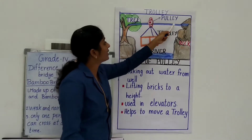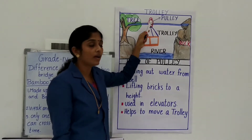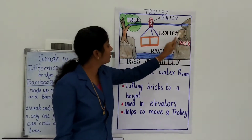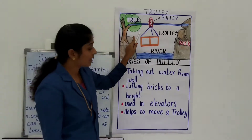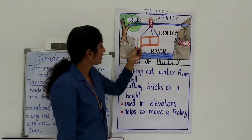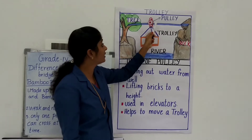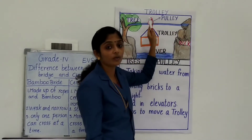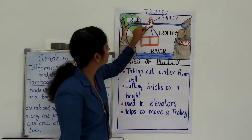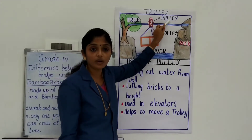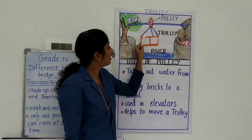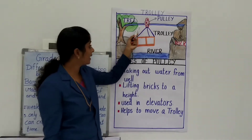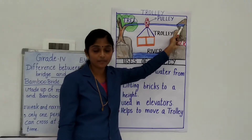This trolley will attach to a rope, and that rope will attach tightly to a rock or tree. And by the help of this circular base called a pulley, the trolley will reach the other side. Pulley is a circular disc that helps the trolley to reach the other side.